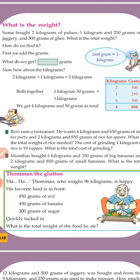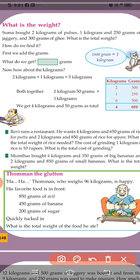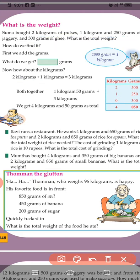What is the weight of 2 kg of pulses and 1 kg 250 g of jaggery? So 2 kg plus 1 kg — that means 2 kg and 1 kg. 2 kg plus 1 kg gives us 3 kg. Then 1 kg and 150 grams plus 3 kg.